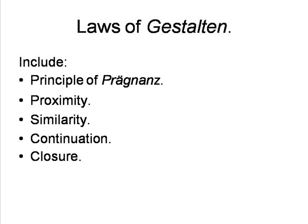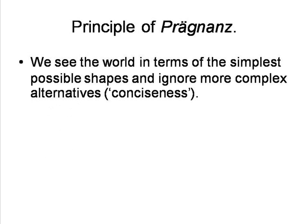Some of the most important laws of Gestalten included Pregnanz, Proximity, Similarity, Continuation, and Closure. The principle of Pregnanz, which in this case means conciseness or pithiness, originates in the concept of being pregnant with something, and refers to the underlying tendency of human beings to see the world in terms of the simplest possible shapes, ignoring more complex alternatives. Many of the more specific laws of Gestalten are specific expressions of this tendency.